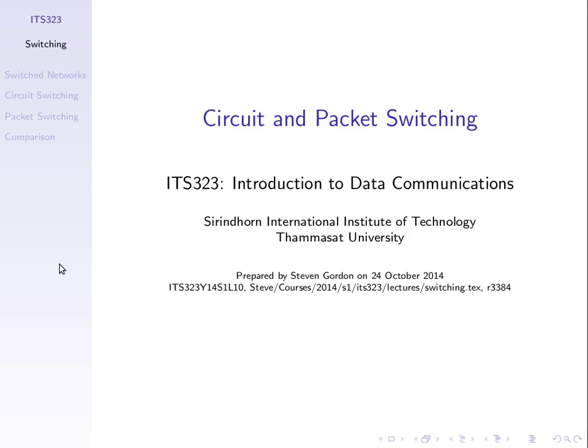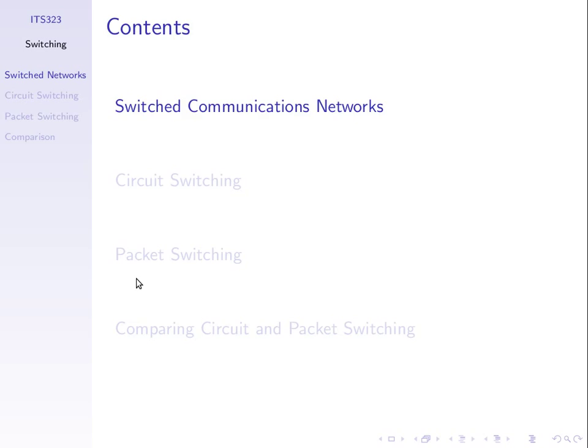We said yesterday there are tasks involved with getting data across a network as opposed to just individual links. One of those tasks we'll call switching. We'll talk about this in this topic, and the other one which is a little bit easier to understand is routing — finding the path, finding which set of links to go by. But before we talk about switching, let's talk about what we mean by a network.